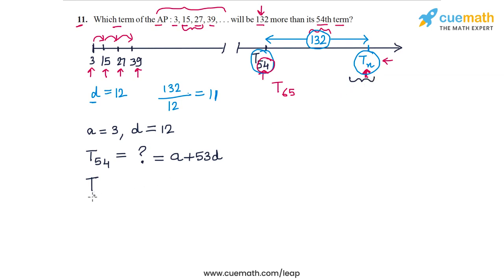Then we can find this term, the term whose position we are trying to find, by adding to T54 this number 132, and then from here we can back calculate the value of n. But a more elegant approach is not to evaluate the numerical value of the terms at all and directly use this expression for T54.